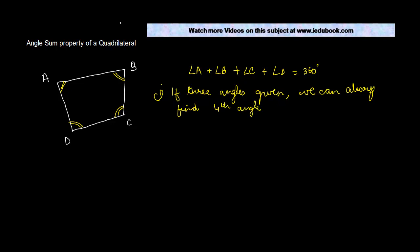Let's say here you were given that angle A is equal to 60 degrees, B is equal to 90 degrees, C is equal to 120 degrees, find angle D. In that case, it is very easy.